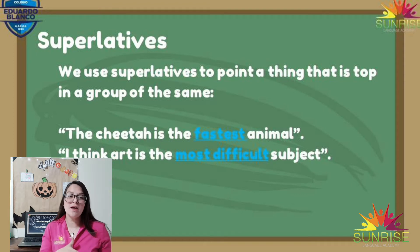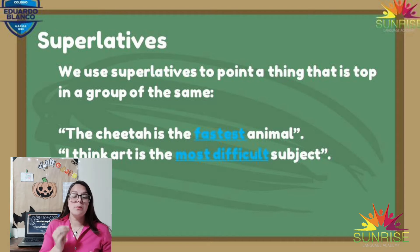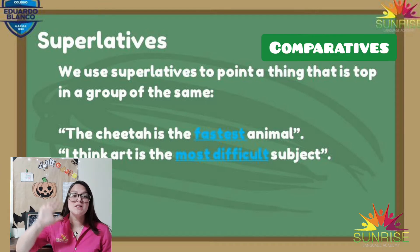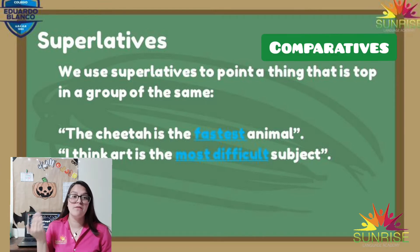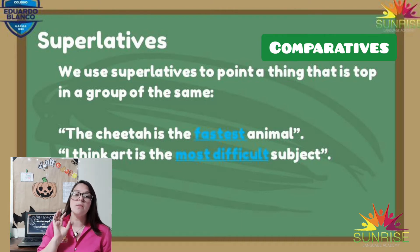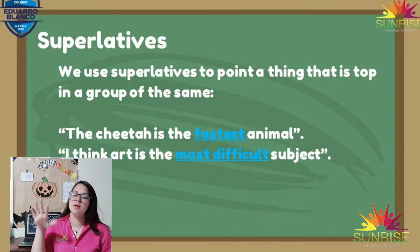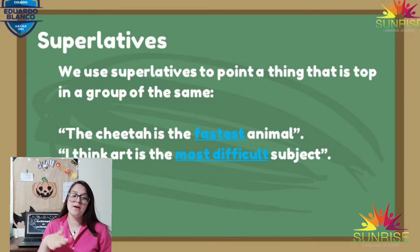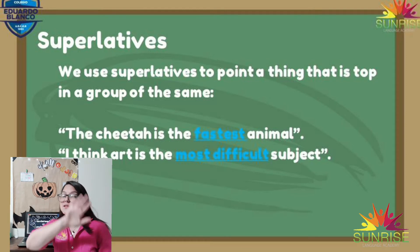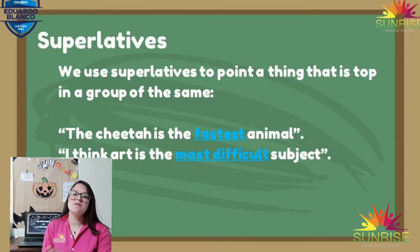Superlatives and comparatives are a very simple concept. We use superlatives when we want to point out that an element is the top of the category. For example, 'the cheetah is the fastest animal in the jungle.' We use superlatives to indicate that one element is the most top within its group — the cheetah is the fastest of all.